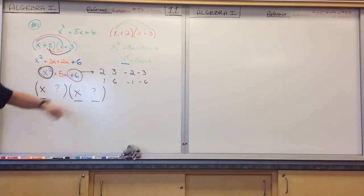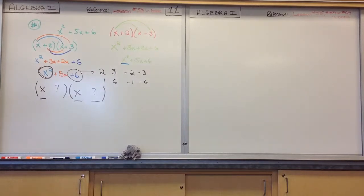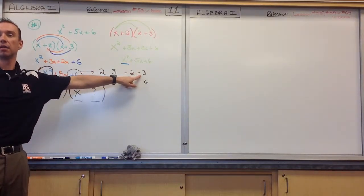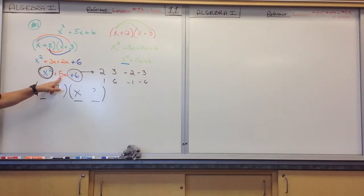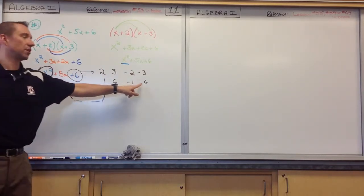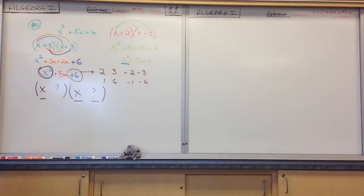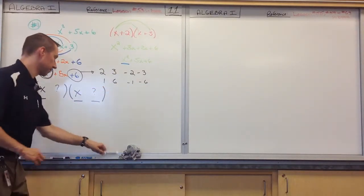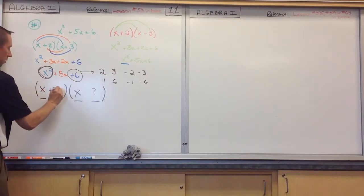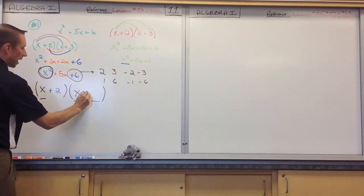Remember, it is the outers multiplied together, plus the inners multiplied together, and those added together give me this middle term. So it is the factors of the last number added together that gives me my middle term. What are the factors of positive 6 that add up to positive 5? There's only one pair that adds up to 5. Negative 2 and negative 3 would give me negative 5 — that's not what I want. The only one that works is positive 2 and positive 3.